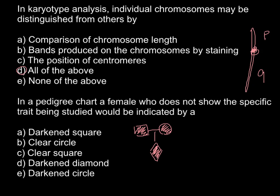A clear circle means that this particular female does not show the trait or genetic disorder. A clear square means this is a male who does not show the genetic disorder or trait. So our question asks about a female who doesn't show the trait — the answer is B, a clear circle.